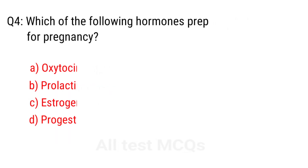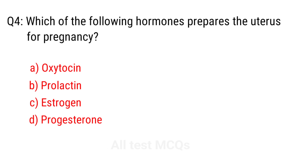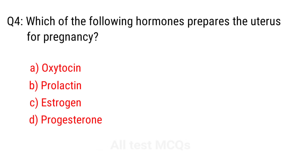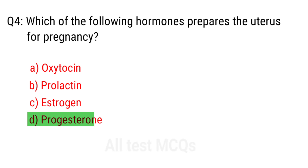Q4. Which of the following hormones prepares the uterus for pregnancy? The right answer is option D: Progesterone.